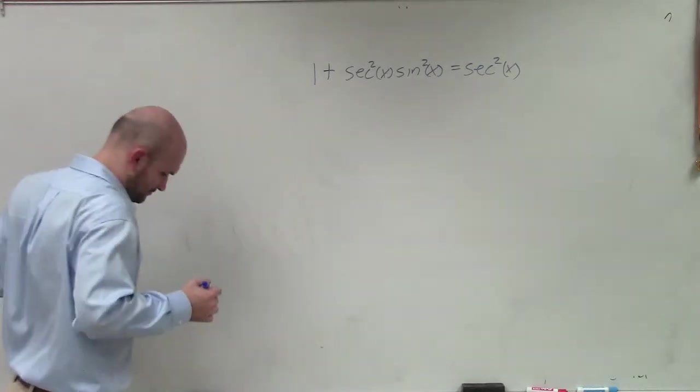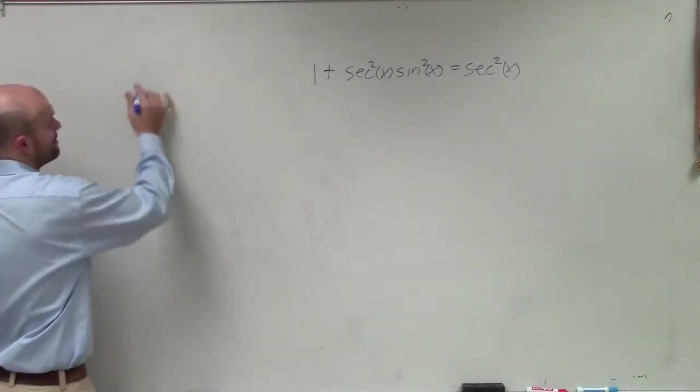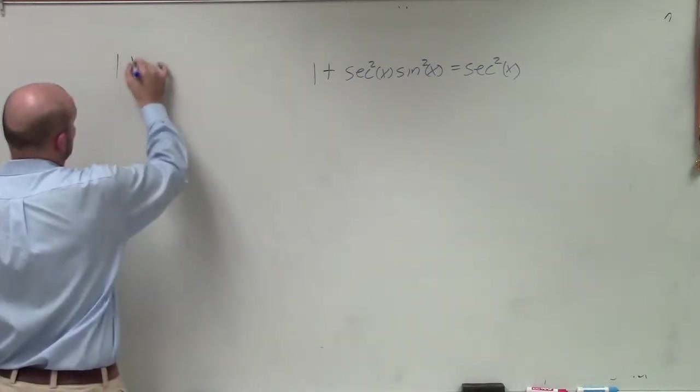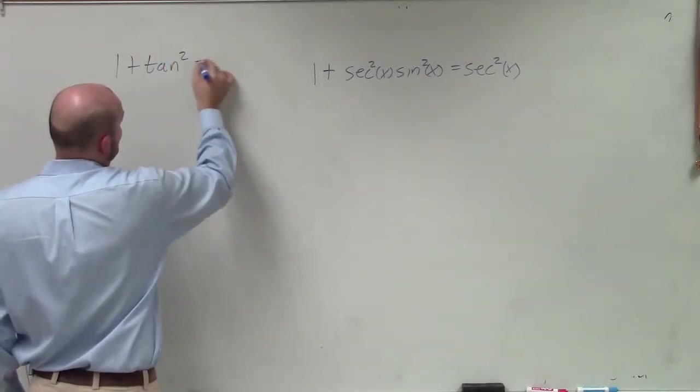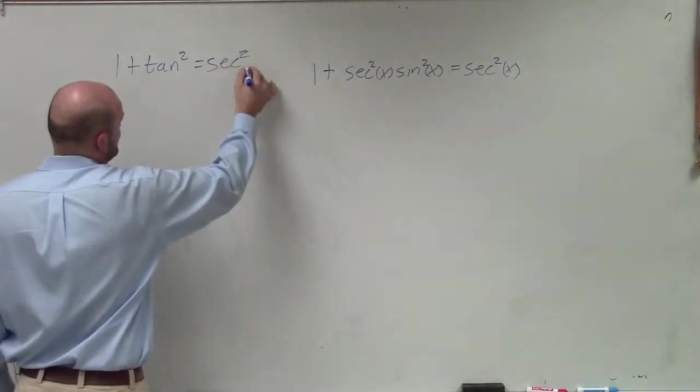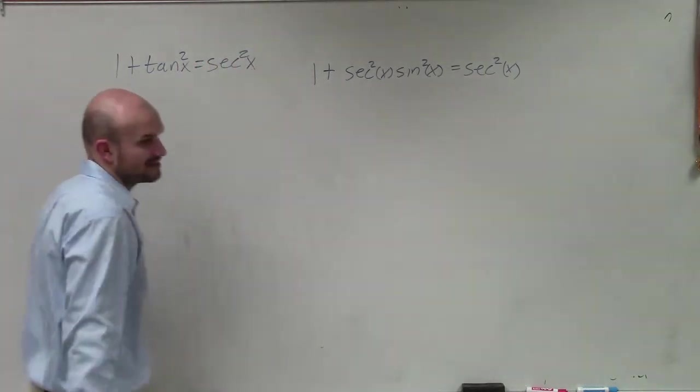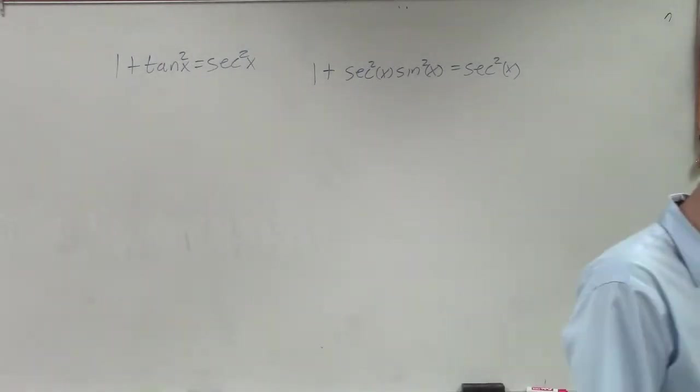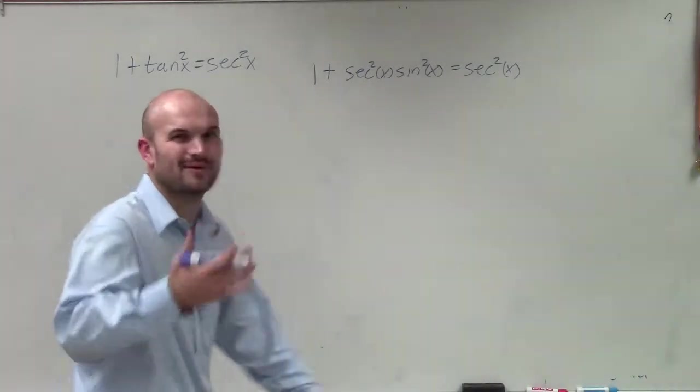So if I was going to do this, remember that the Pythagorean identity for a secant is going to be 1 plus tangent squared equals secant squared. That'd be like of x, right? Yeah, I got that right. OK, it's been a while.